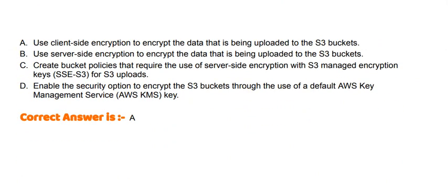Option A: Use client-side encryption to encrypt the data that is being uploaded to the S3 buckets. Option B: Use server-side encryption to encrypt the data that is being uploaded to the S3 buckets. Option C: Create bucket policies that require the use of server-side encryption with S3 managed encryption keys for S3 uploads. Option D: Enable the security option to encrypt the S3 buckets through the use of a default AWS Key Management Service key.